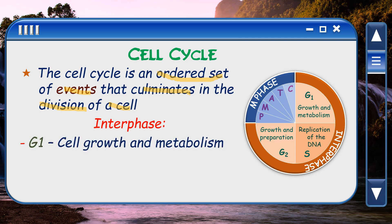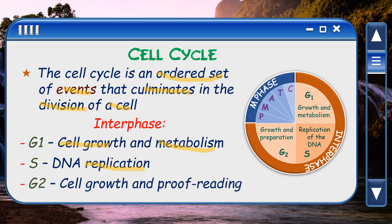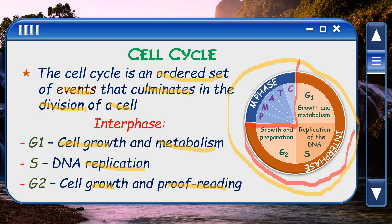Interphase. We have G1, that is cell growth and metabolism. We have the S phase, which is DNA replication, and then we have G2, which is cell growth and proofreading. If you look at this cycle here, we have the brown part representing the interphase.